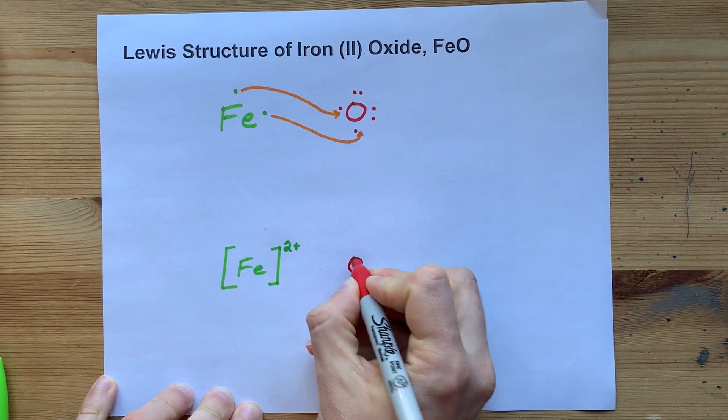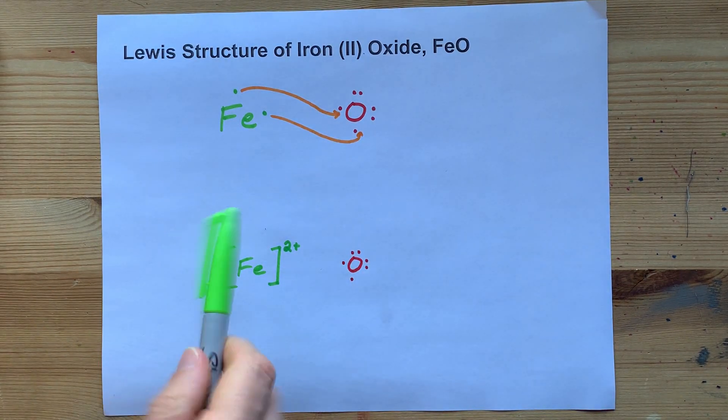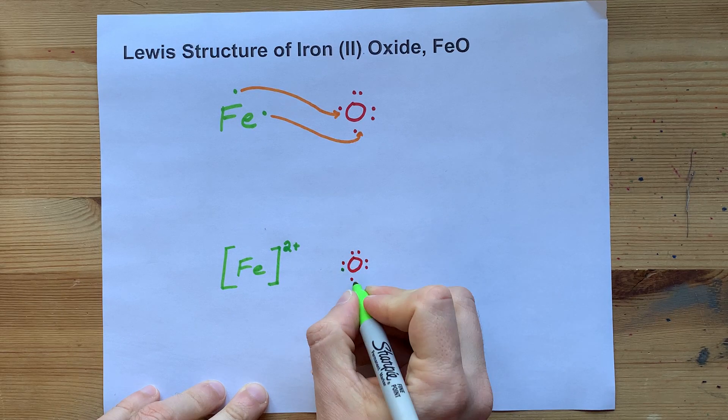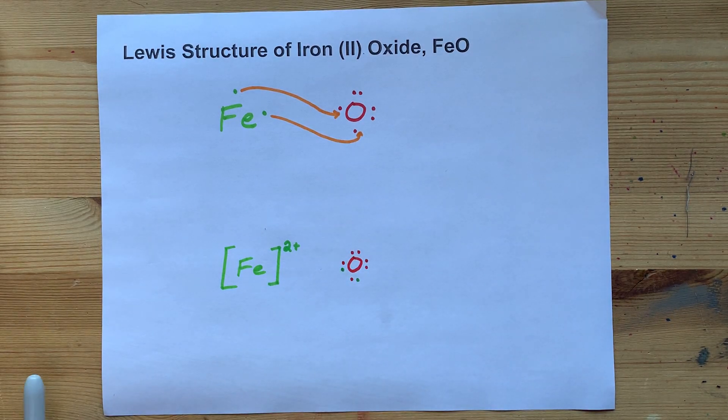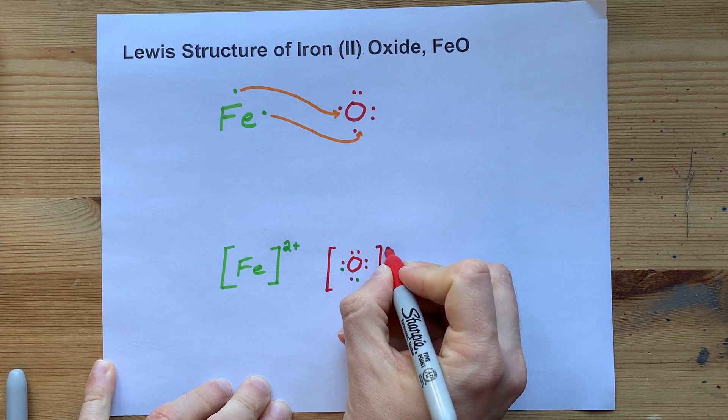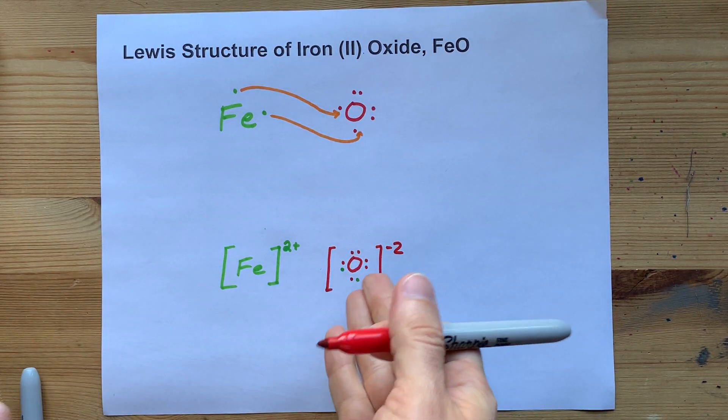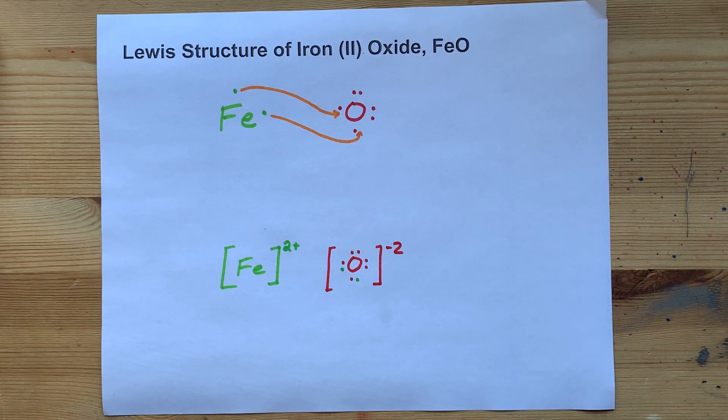Oxygen, on the other hand, brings six electrons with it and has the two electrons that iron brought with it. It now has two extra electrons, has a charge of minus two, and has a full octet. After all, there's eight electrons in its outer shell now.